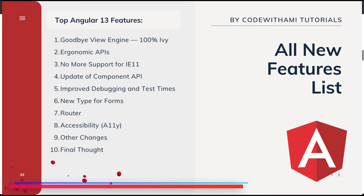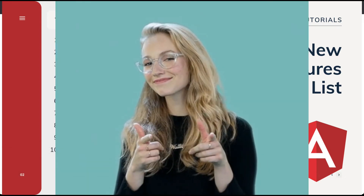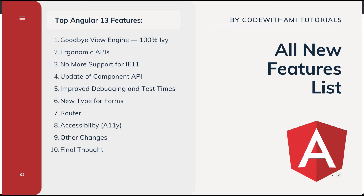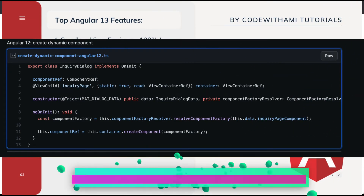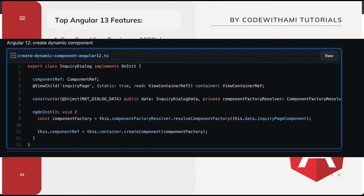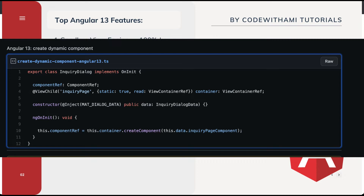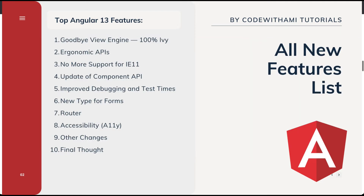The next feature is an update to Component APIs. You can now create dynamic components with less boilerplate code, thanks to an improvement in the ViewContainerRef.createComponent API. Previously, we had to create a component factory using ComponentFactoryResolver. Now we no longer need ComponentFactoryResolver to create dynamic components — we can directly pass the component data to the container's createComponent, instead of passing the component factory. Angular will handle that internally.